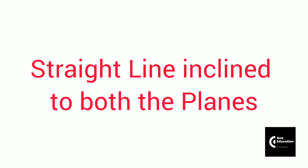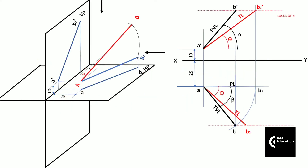Hello friends. In the last video we have seen the projection of lines and its basics. We have seen when a line is inclined to any one plane and parallel to another plane. Now in this lecture we are going to discuss if a line is inclined to both the planes.